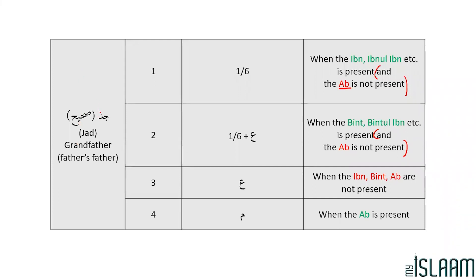In today's lesson we will be going over Zawil Furood number 2, which is the Jad. I have written in brackets here 'Jad Sahih.' Jad translates in English as grandfather; Jad Sahih means the father's father, and we will discuss this in greater detail later on inshallah.